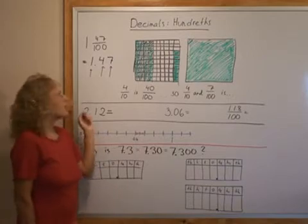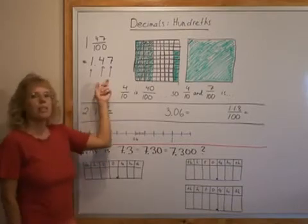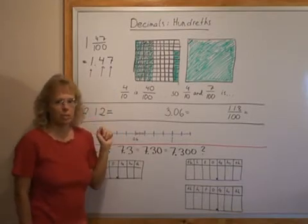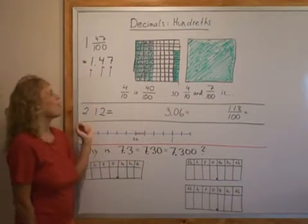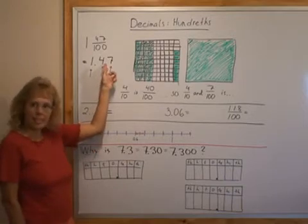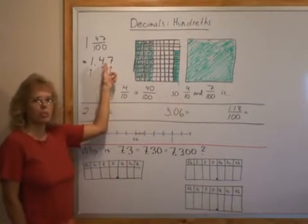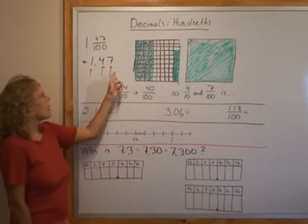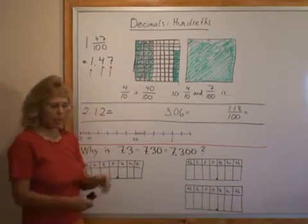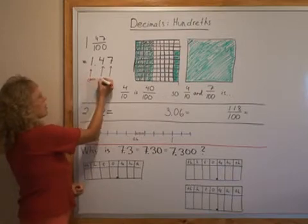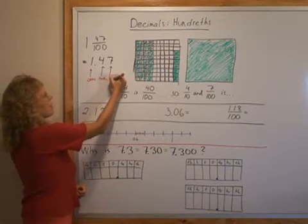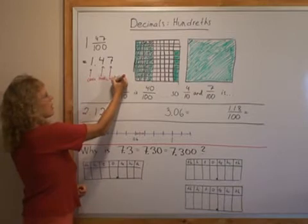And these arrows here are now pointing to the different place values in the number. This place here is the ones place. We have one. And this place is the tenths place like I showed in the other video. And the last place here is the hundredths place. So here we have ones place, tenths place and then hundredths place.